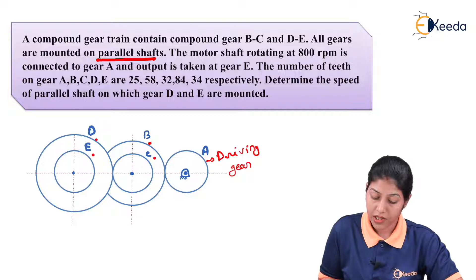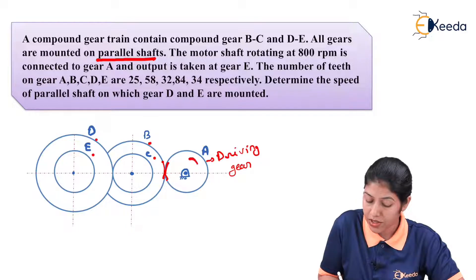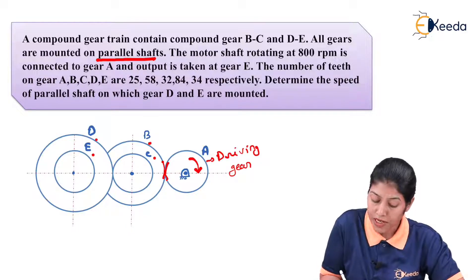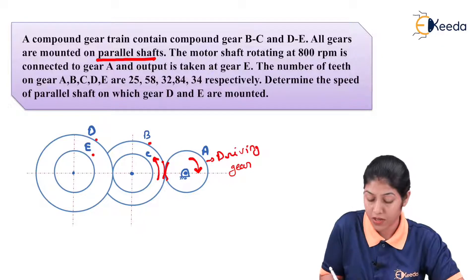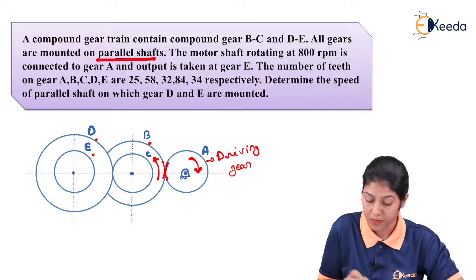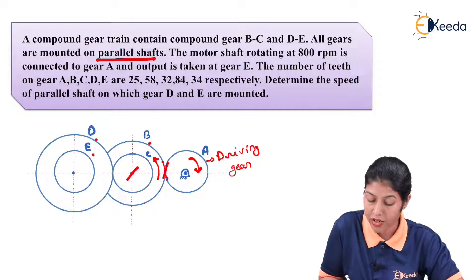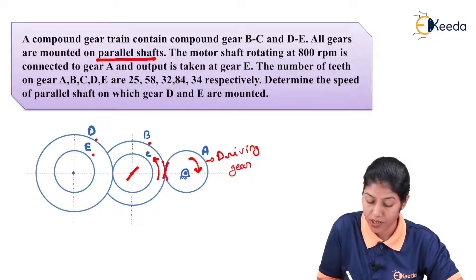The output is taken at gear E. Gear A is in meshing condition with gear B of the compound gear. In whatever direction gear A moves, the opposite direction we will consider for gear B. So if gear A is moving in a clockwise direction, gear B will move in an anticlockwise direction. Speed will not be equivalent. Gear C is mounted on the same shaft as gear B, so the speed and direction of gear C will be equivalent to gear B because this is a compound gear.